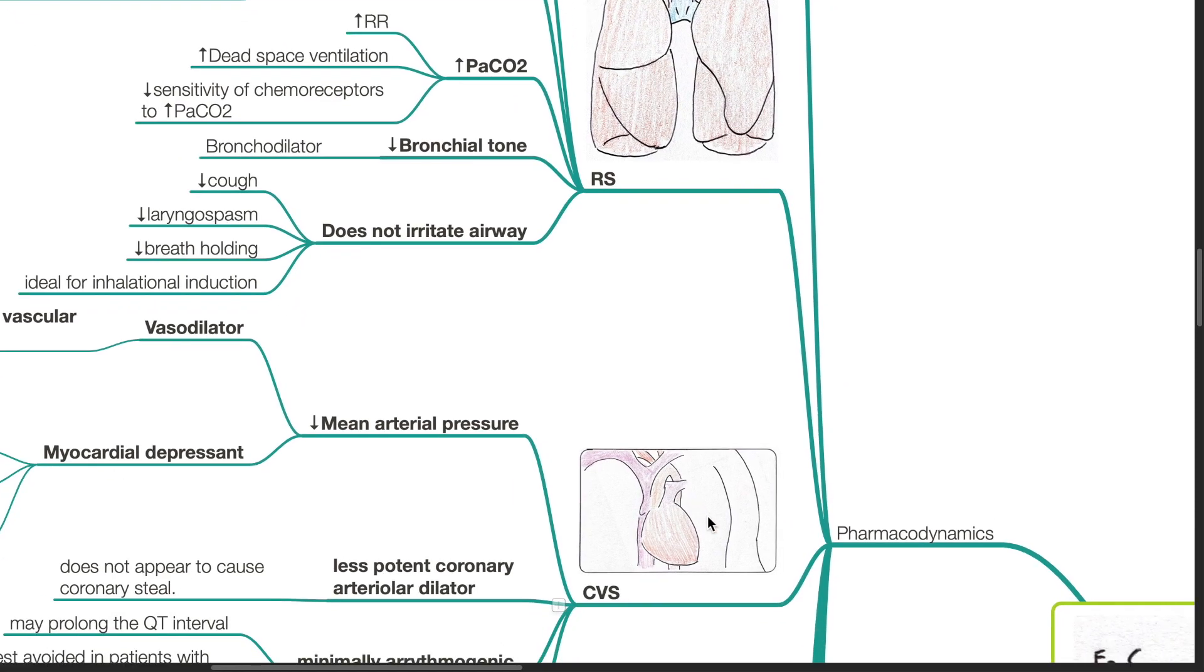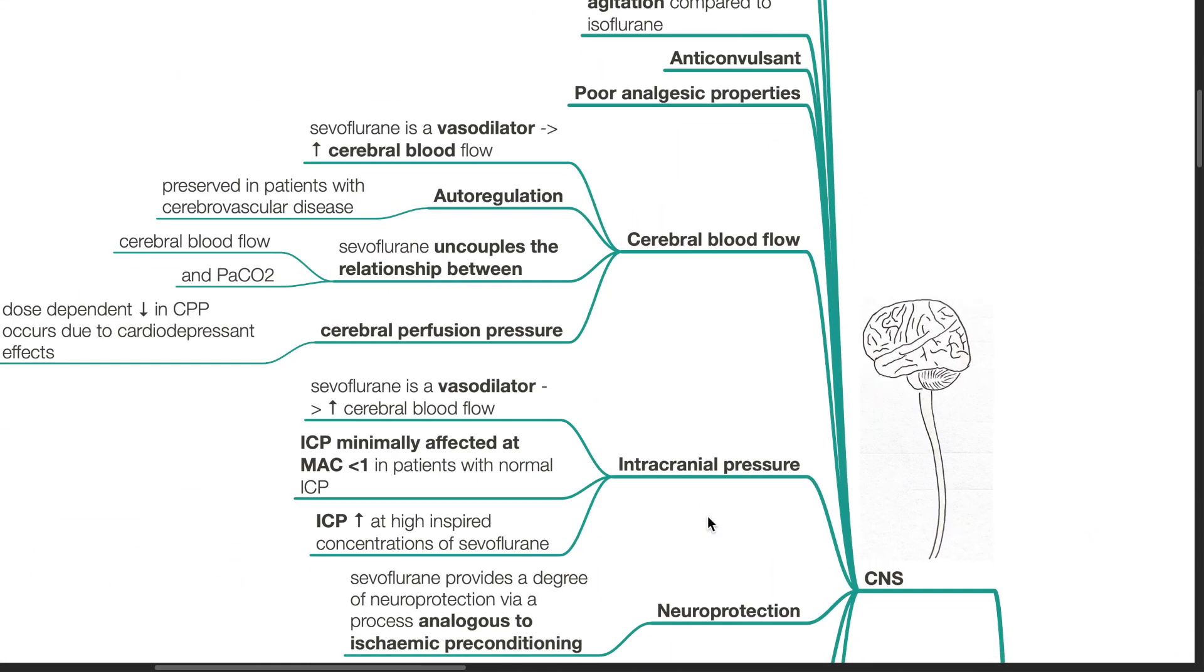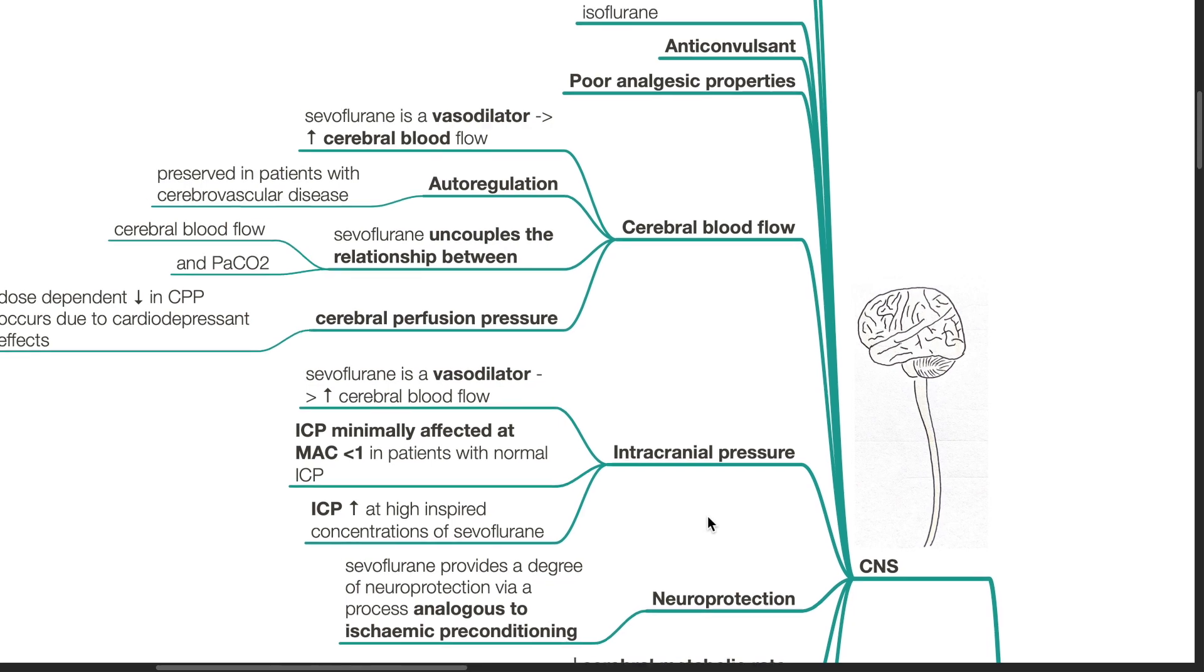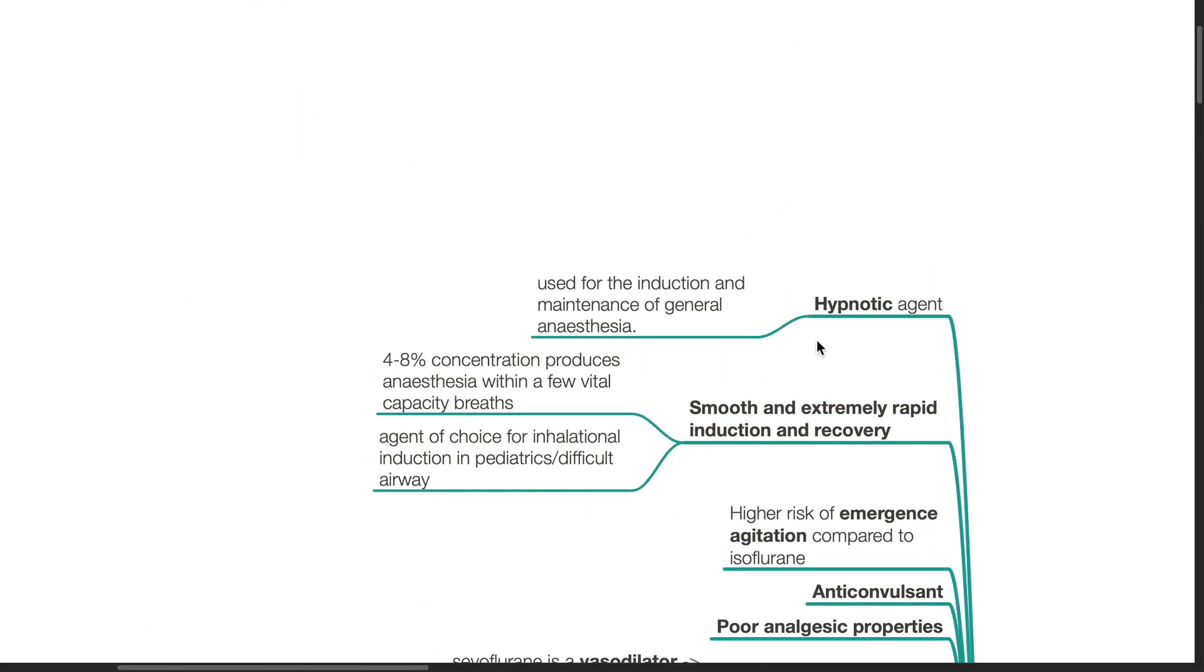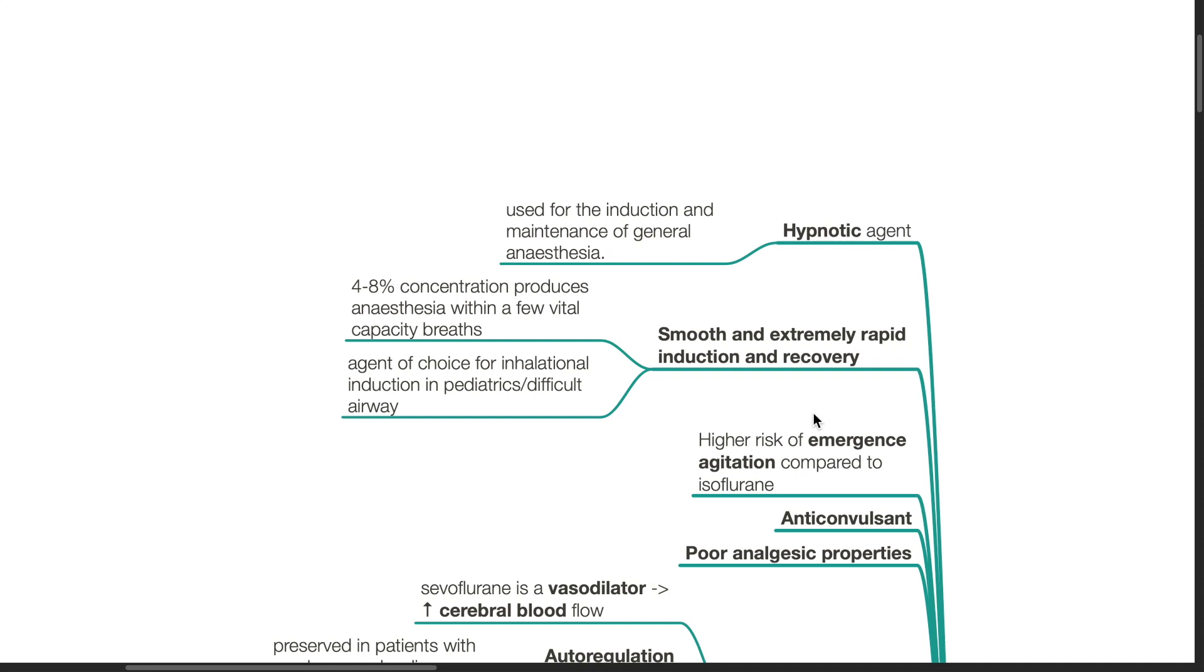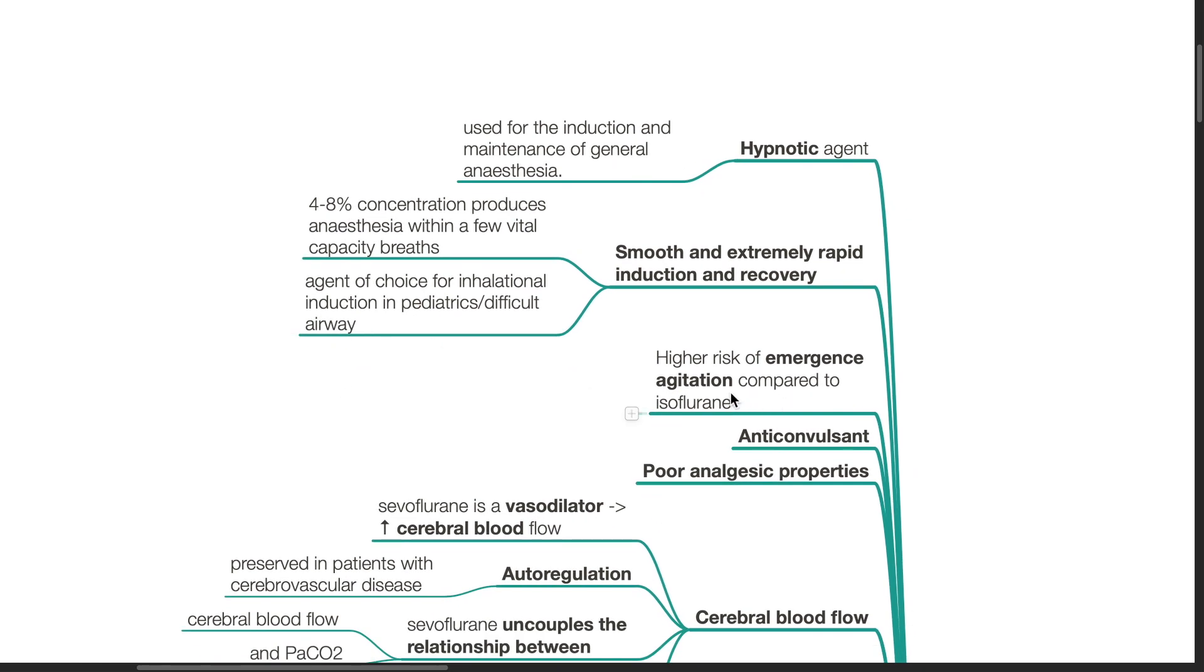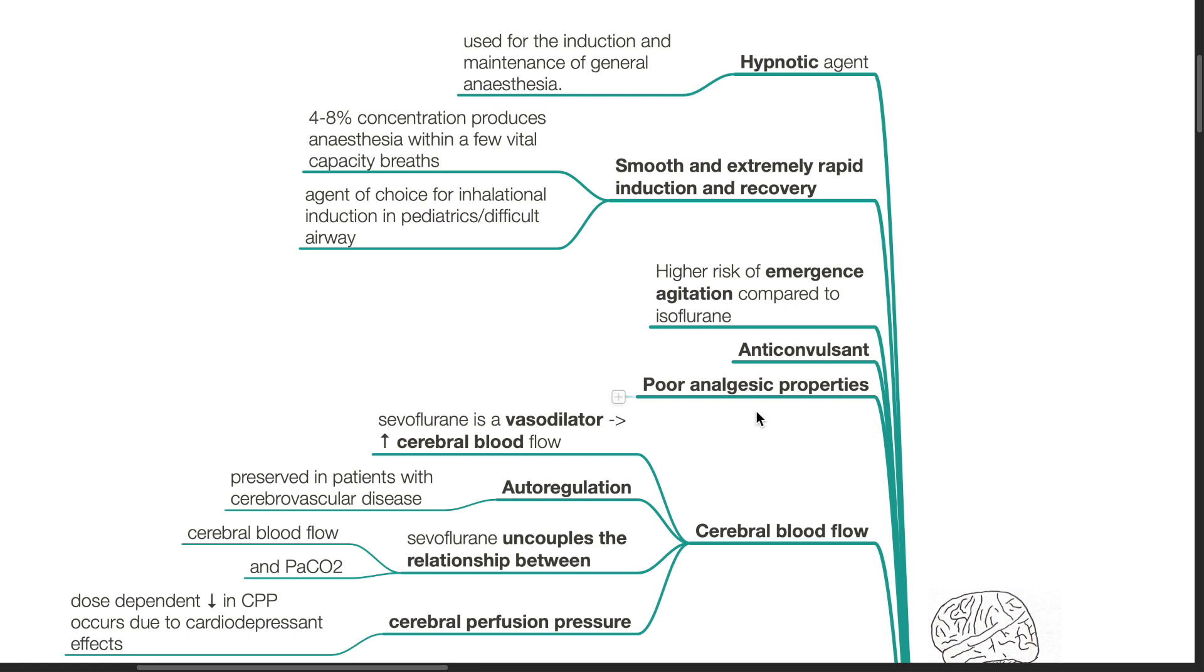Pharmacodynamics. Effects of Sevoflurane on the central nervous system. Sevoflurane is a hypnotic agent and is used for induction and maintenance of general anesthesia. There is smooth and extremely rapid induction and recovery. 4 to 8% concentration produces anesthesia within a few vital capacity breaths. Sevoflurane is the agent of choice for inhalational induction in pediatrics or difficult airway. There is a higher risk of emergence agitation compared to isoflurane. It has anticonvulsant, however poor analgesic properties.